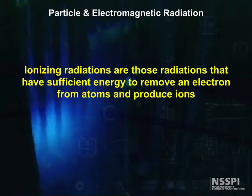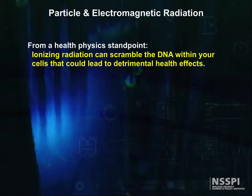Ionizing radiation is thus defined as those radiations that have sufficient energy to remove electrons from atoms and produce ions. What's so special about ions? This is a far deeper question than you might realize. Although ions are very common, those from radiation are particularly important to us. From a health physics standpoint, ionizing radiation can scramble the DNA within your cells and could lead to detrimental health effects.